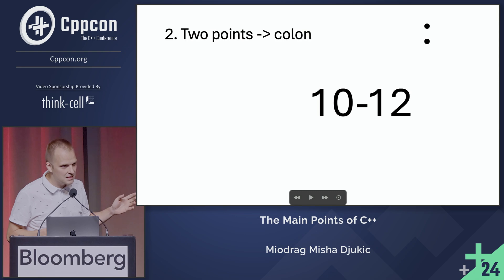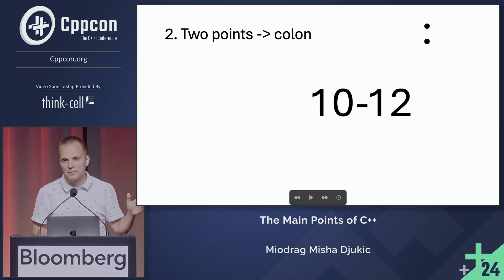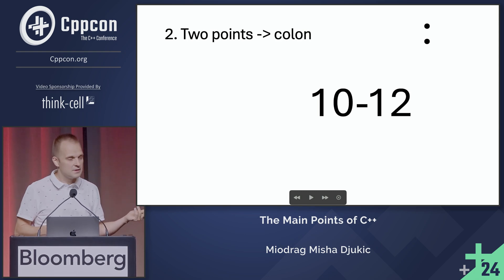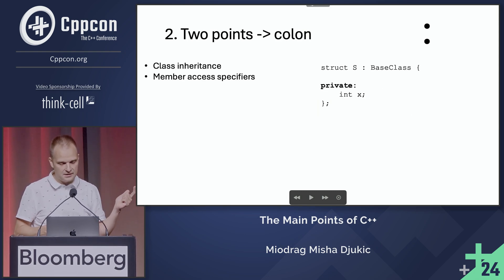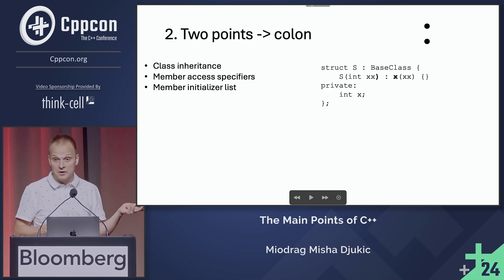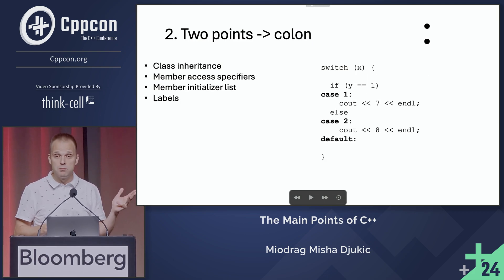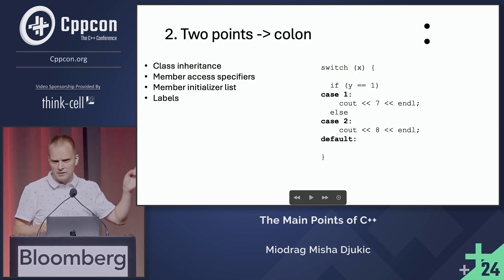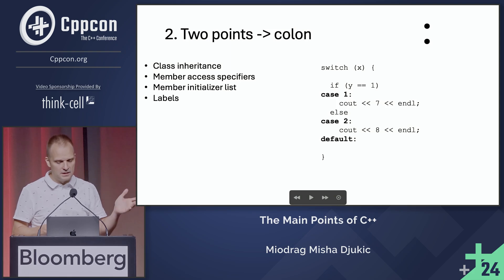Now let's see the answers. We'll start from the more obvious ones. So we have class inheritance, member access specifiers, member initializer list, and labels. Notice the weird example — it's valid code — but don't forget also goto labels.